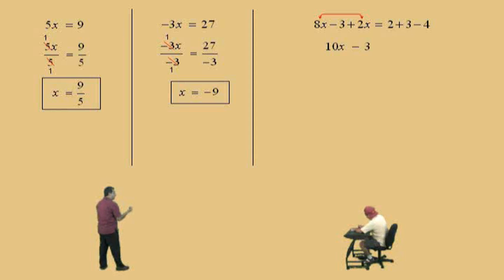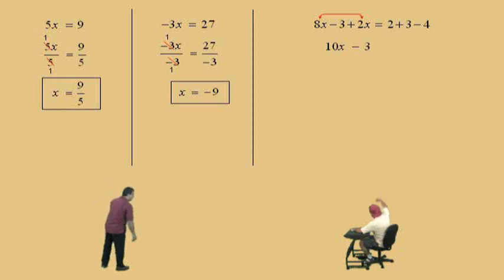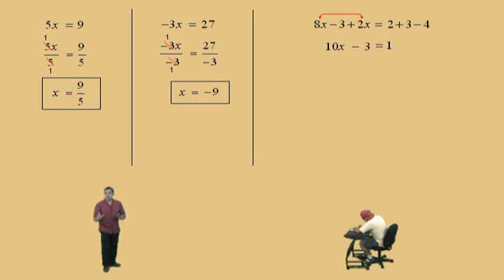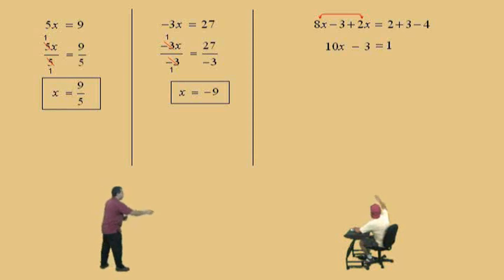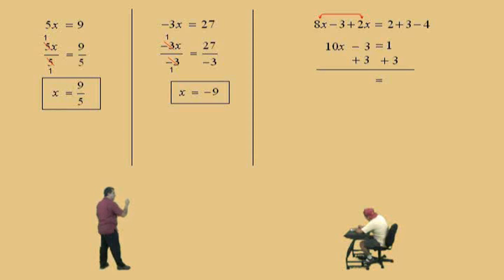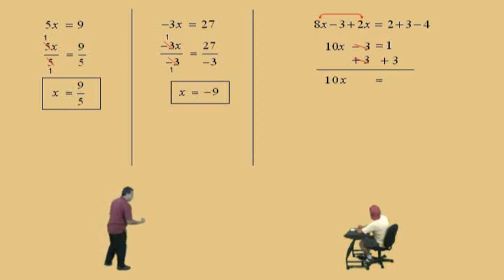On the right-hand side, Charlie, what's 2 plus 3 subtract 4? 1. Very nice. Now, first we have to get rid of our additions and subtractions that are attached to the x. We have that negative 3 there, Charlie. So what do I need to do to both sides? Add 3. Add 3, very nice. And now negative 3 plus 3 cancel, they equal 0, and we have 10x on the left-hand side, and the right-hand side we have 4.